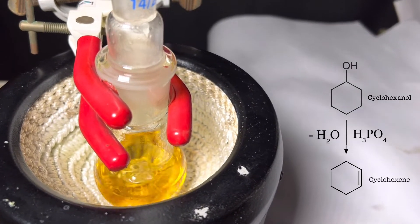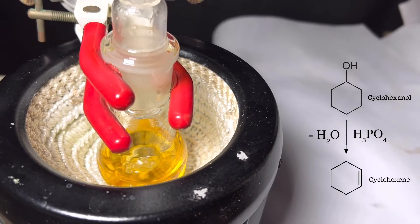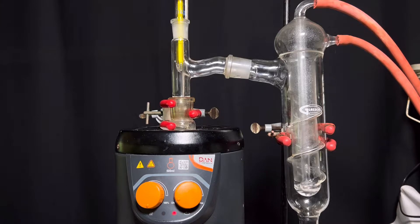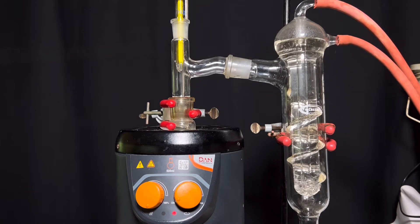After 15 minutes the reflux was stopped and the flask was allowed to cool down to room temperature. Then the flask was arranged for downward distillation using a Liebig condenser.